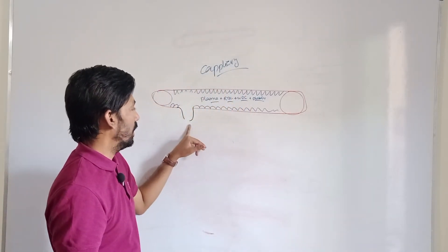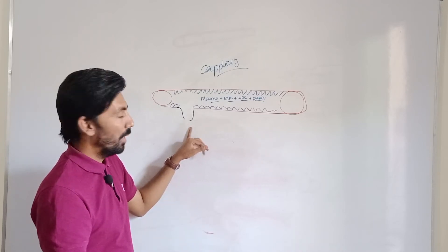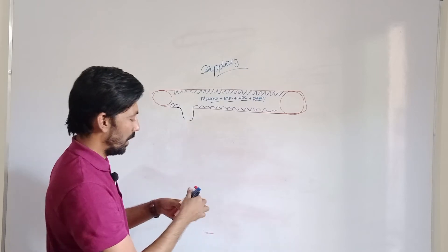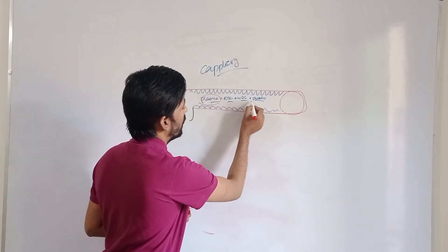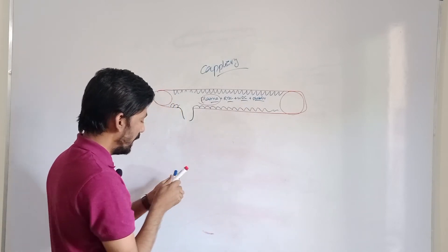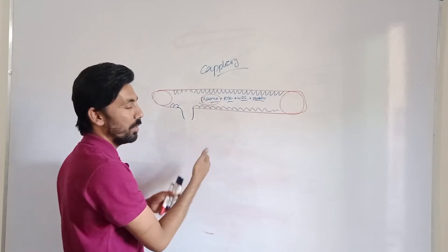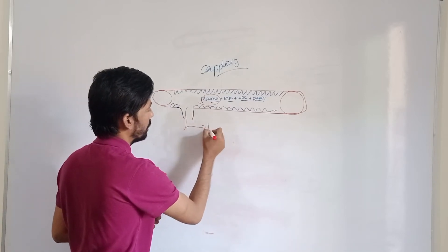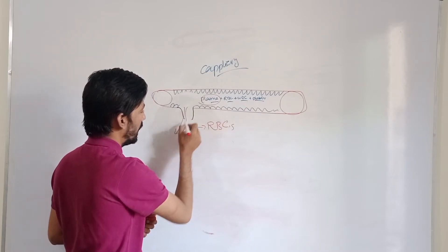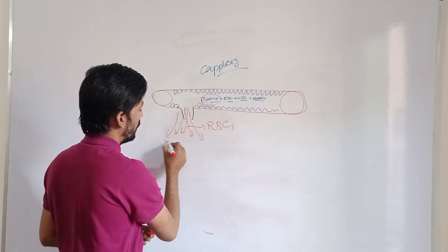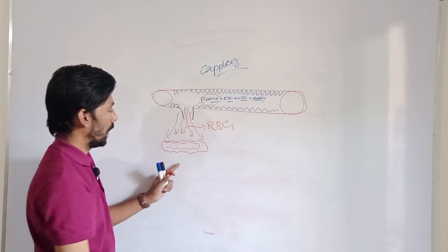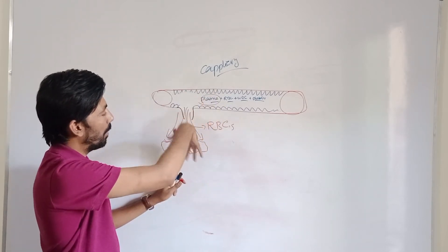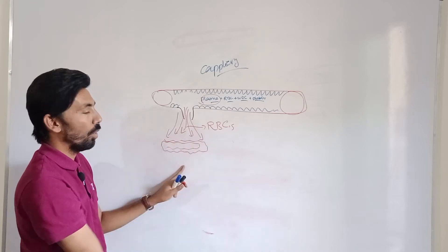To recap: retinal edema is due to plasma, hard exudates are due to plasma proteins and lipoproteins, and now we discuss hemorrhages due to red blood cells. If the microaneurysm is too weak — the capillary wall too weak — the RBCs come out into the retinal tissues. That accumulation of blood in the retinal tissue is called retinal hemorrhages.